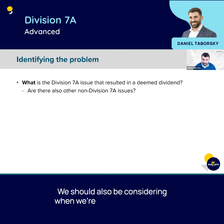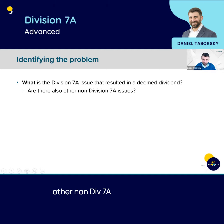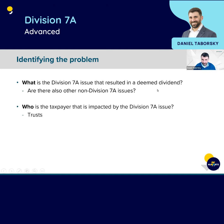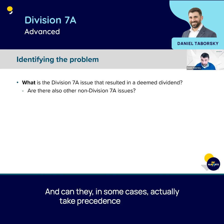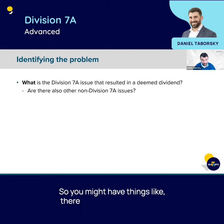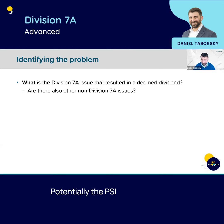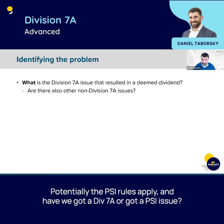We should also be considering when we're doing this: are there other non-Div 7A issues involved? And can they in some cases actually take precedence over Div 7A? You might have things like questions about interest deductibility. Potentially the PSI rules apply — and have we got a Div 7A issue or have we got a PSI issue?